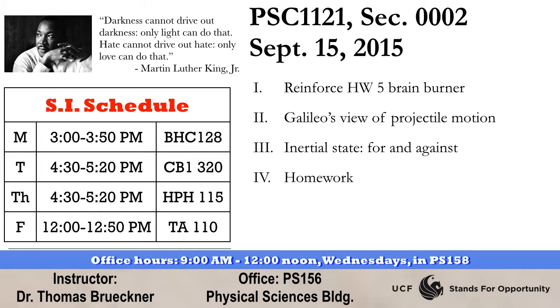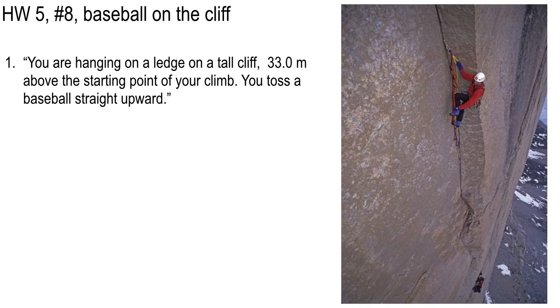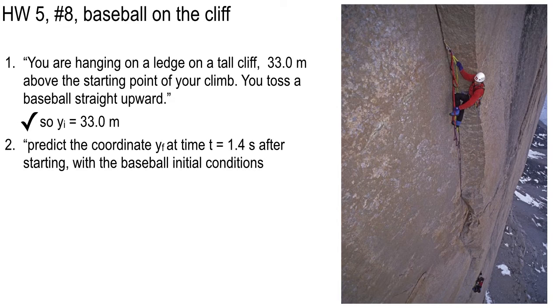A lot of you were nervous about homework problem number eight on homework five. Let's take a look at this one. This is verbatim cut and paste: You are hanging on a ledge on a tall cliff 33.0 meters above the starting point of your climb. So this guy down here, there's the starting point. Here's you up here, and you've got a baseball you toss straight upward.